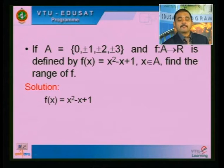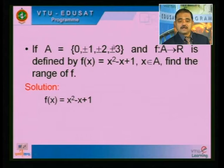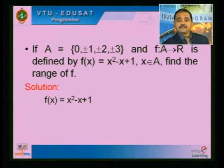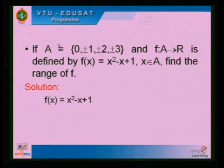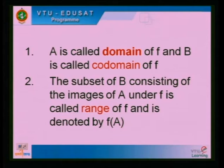Next problem: let A = {0, +1, −1, +2, −2, +3, −3} and F is a function from A to R, defined by F(x) = x² − x + 1, where x ∈ A. Find the range of F. The range is a subset of B, consisting of the images of A under F.